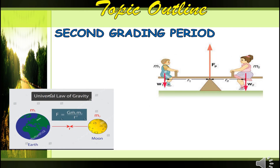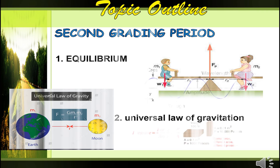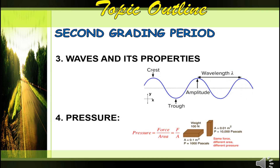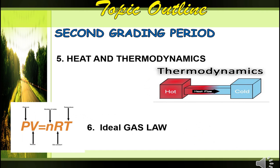For the second grading period, here is the topic outline. First is equilibrium, followed by the universal law of gravitation. Next is waves and its properties, then pressure. Topic number five for the second grading period is heat and thermodynamics. Also in the second grading period, you are going to learn about ideal gas law.